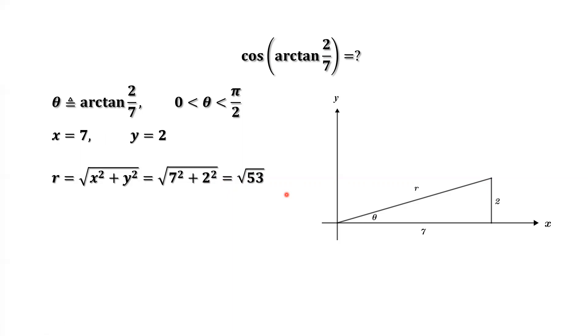By definition, for this right triangle, cosine arc tangent of 2 over 7 equals cosine of theta. Inside the part we defined, that's a theta. Based on this right triangle, cosine theta equals